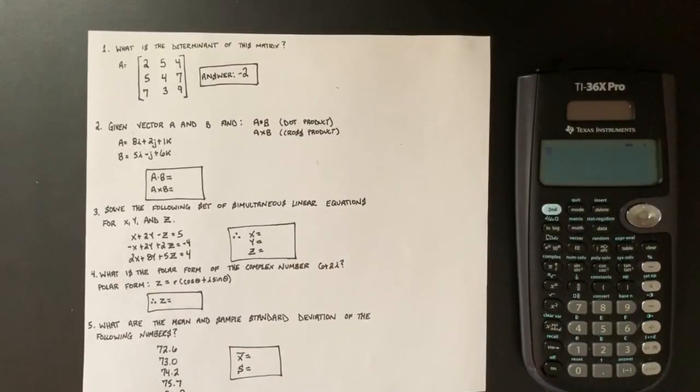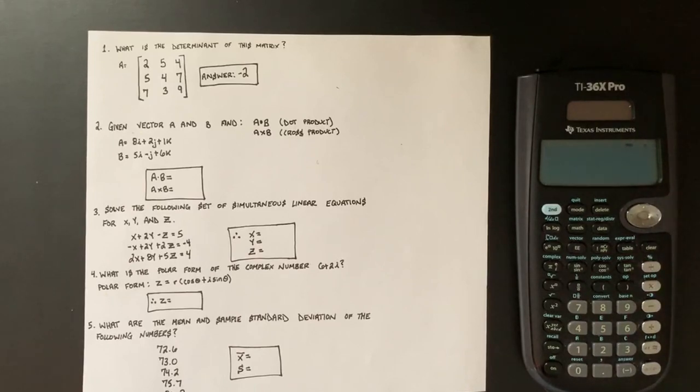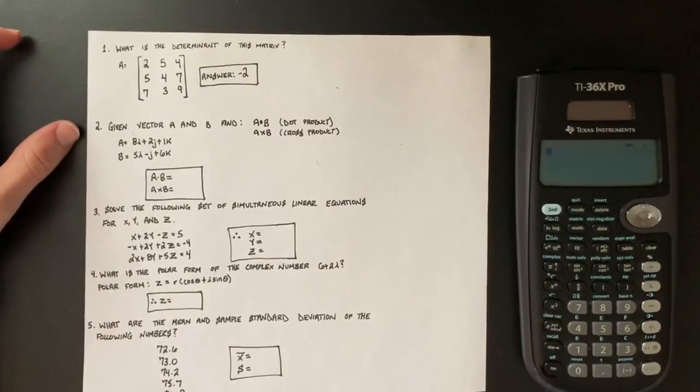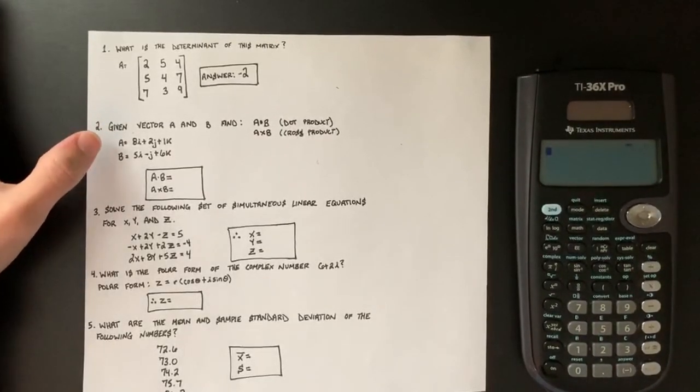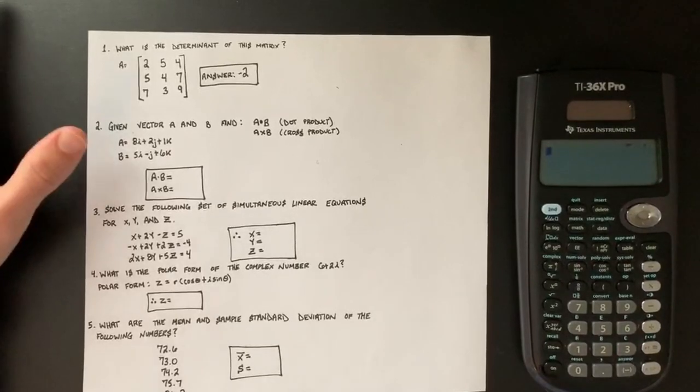Let's talk about how you would solve a vector question on the TI 36X Pro. Reading number two, given vector A and B, find A dot B, A cross B. So on number two, we're given two different vectors. They're both three variable vectors and they're wanting us to find the dot product and the cross product.